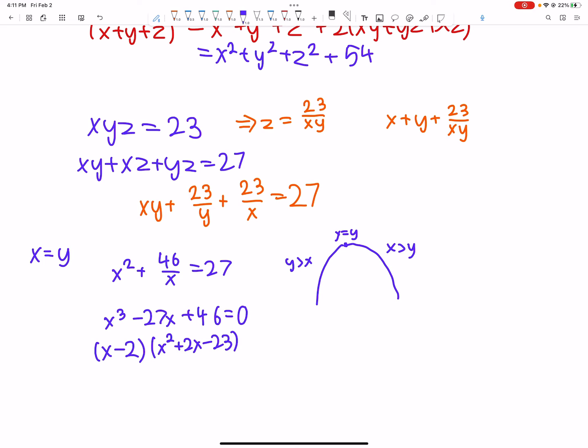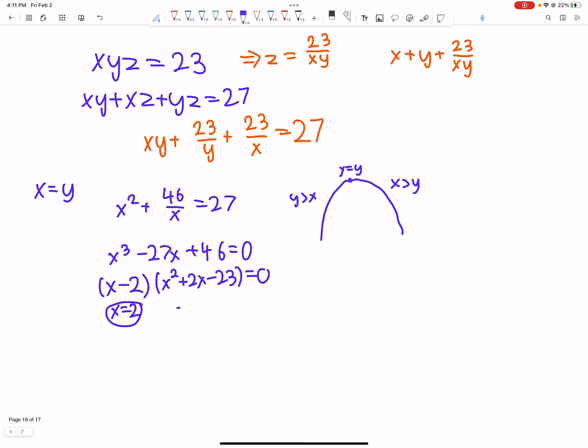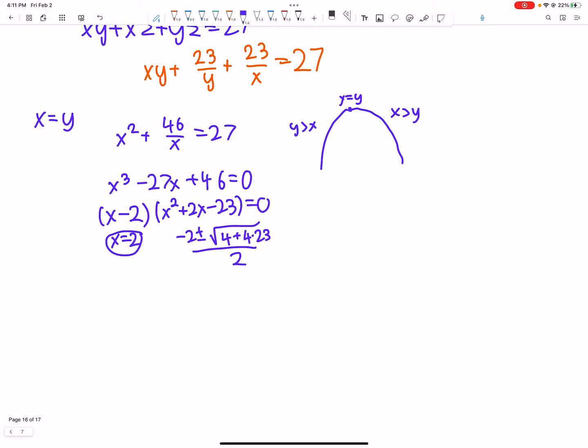So, then, we have this, we have a bunch of possibilities, right? x can be equal to 2, and therefore y as well. And then, we have this, and if you look at the quadratic formula, it's like some ugly irrational, is the point here. So, first, let's just try x equals 2, and maybe we'll come back to this if we need to. So, x equals 2, then therefore, x is 2, y is 2, and then z is therefore 23 over 4.